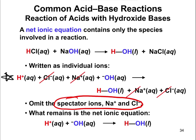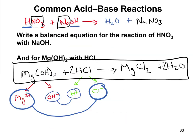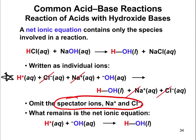In these neutralization reactions with hydroxide bases, your net ionic equation is always going to be H+ plus OH− goes to H2O. That's how you write a net ionic equation.